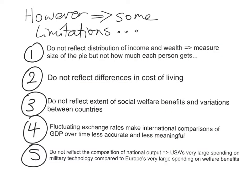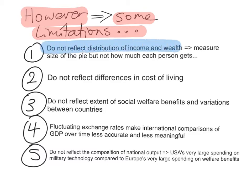However, there are some limitations of using national income statistics. First of all, they do not reflect the distribution of income and wealth. They measure the size of the pie, but not how much each person gets. So maybe the economy is growing and achieving economic growth, but the rich are getting richer and the poor are getting poorer — that's not reflected in national income statistics.